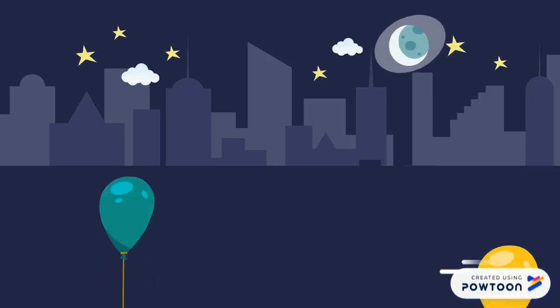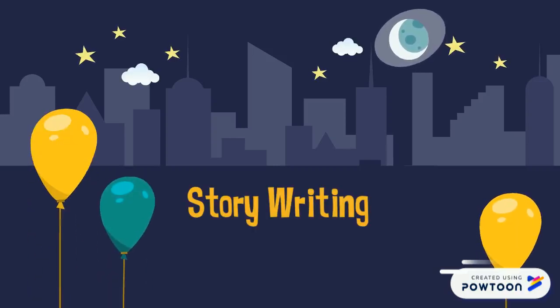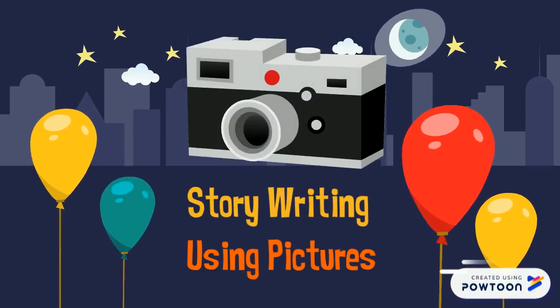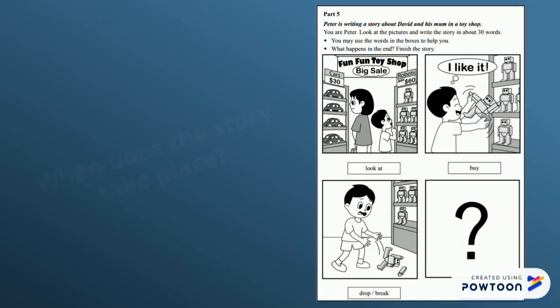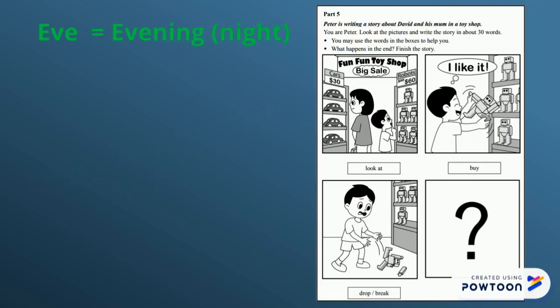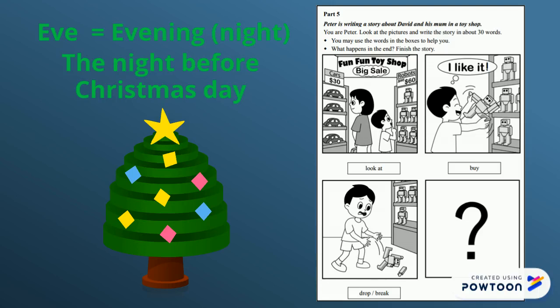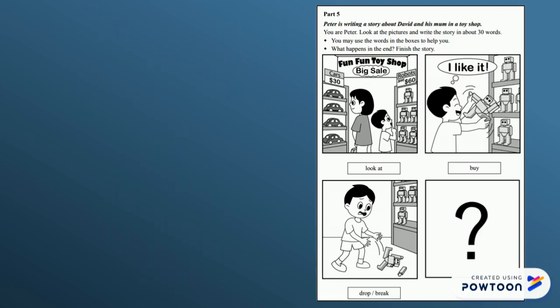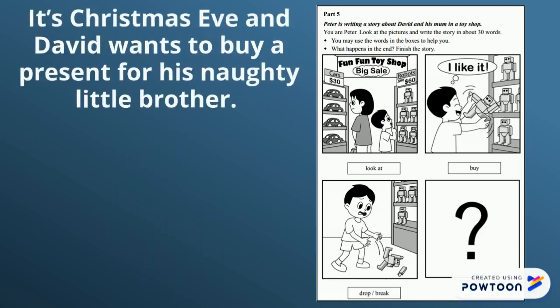Hello and welcome to story writing using pictures part 2. For my 'when' — when the story happens — I have decided that it will be Christmas Eve, that just means it's the night before Christmas. So I will begin by saying it's Christmas Eve and David wants to buy a present for his naughty little brother.